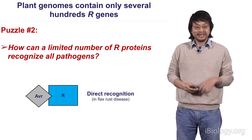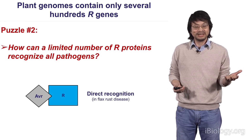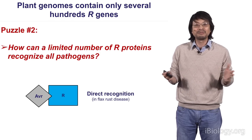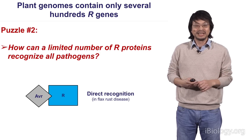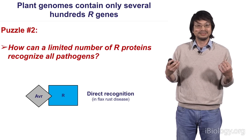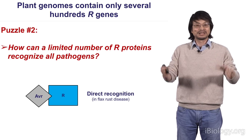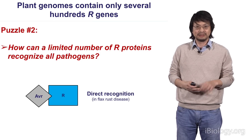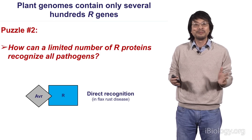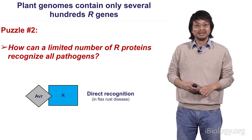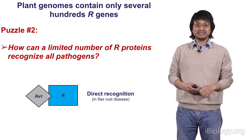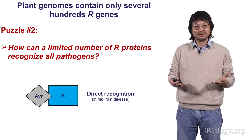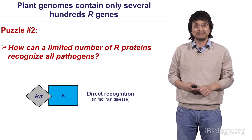When the plant genome was sequenced in early 2000, first from Arabidopsis, people were very interested to see how many R proteins are in plants. In humans, we have these antibodies with endless combinations that can recognize all kinds of microbes - 10 to the 14th specificity. So we wanted to know how many R proteins are encoded in the plant genome. There are only hundreds of these genes. How can hundreds of immune receptors recognize thousands of microbes? That's really a big puzzle based on direct recognition.